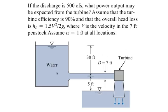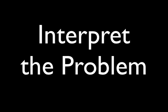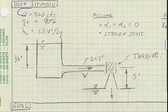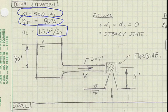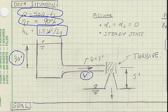This problem involves a flow of water through a turbine to generate power. The flow rate is 500 cubic feet per second. The turbine efficiency is 90%. The head loss is given by this equation where V is the velocity in the penstock. The elevation head of the turbine is 30 feet above the turbine. The penstock diameter is 7 feet and the turbine is located at 5 feet above the tailwater.